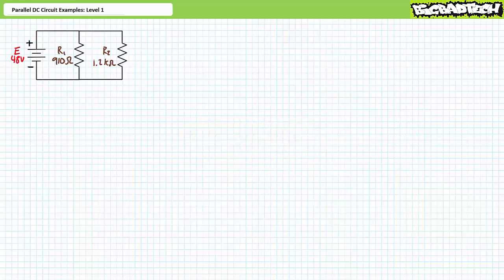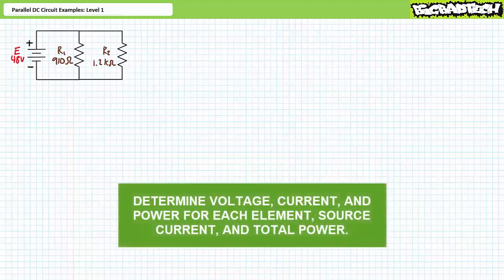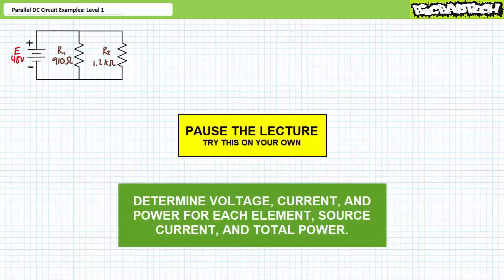Our first illustrated example features a 48-volt source in parallel with R1, a 910-ohm resistor, and R2, a 1.2-kilohm resistor. We're being asked to solve for the voltage drop across each element, the current through each element, the power dissipated by each element, the source current, and the total power. By all means, pause the lecture and try this on your own.